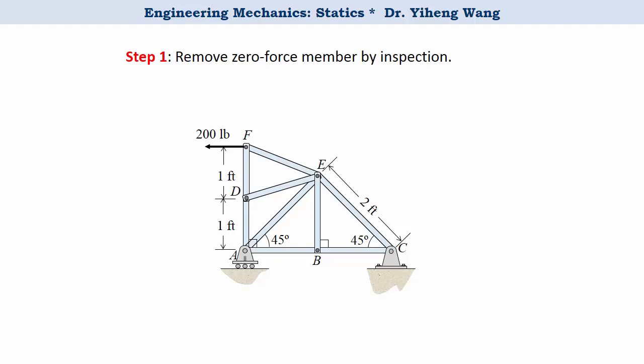Or if a joint is connected to three truss members, and again the joint is not subjected to any other external force, and two of these three members are collinear, then the third member must be a zero force member as well. So by inspection we can tell members BE and DE are both zero force members, and they can be removed from the structure.